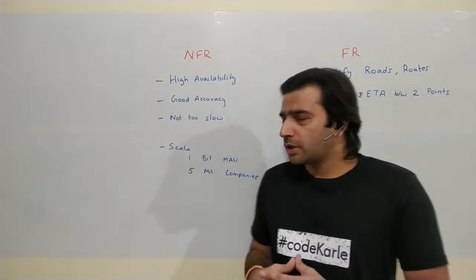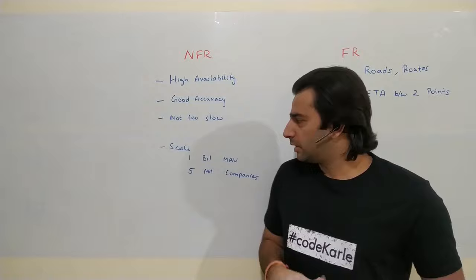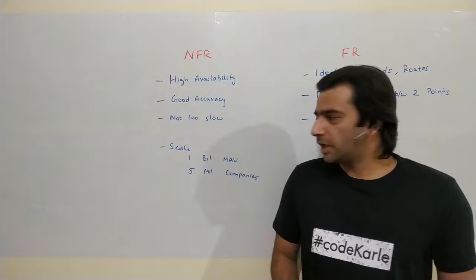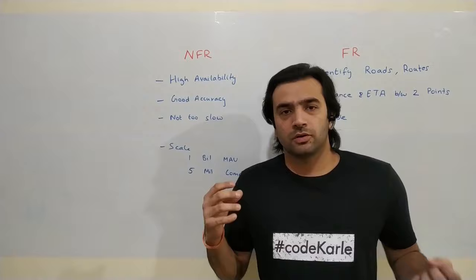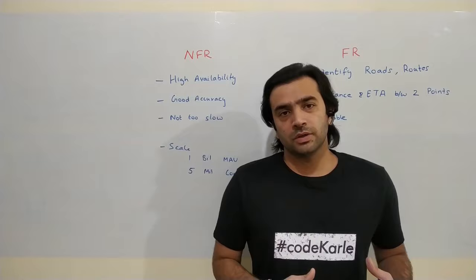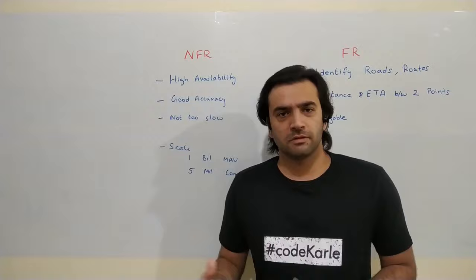On scale: Google Maps roughly has a billion monthly active users who access it a couple of times a day or at least a couple of times a week. That means roughly 5 to 10 billion requests coming in a month for time, distance, and route between two points. There are also 5 million companies using Google Maps — companies like Uber who use it for navigation and pricing.